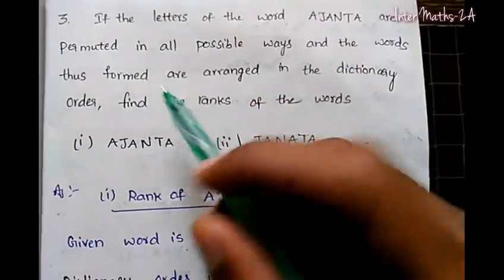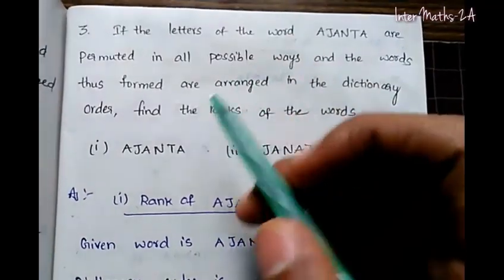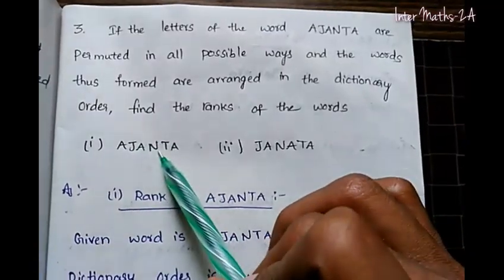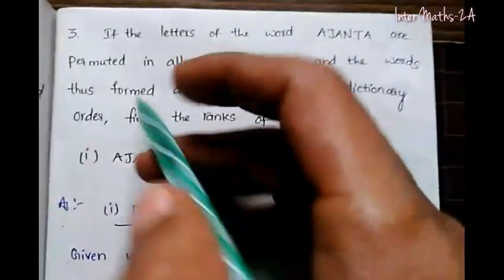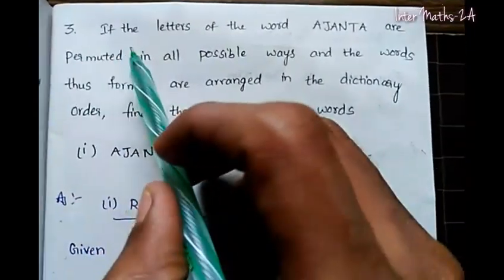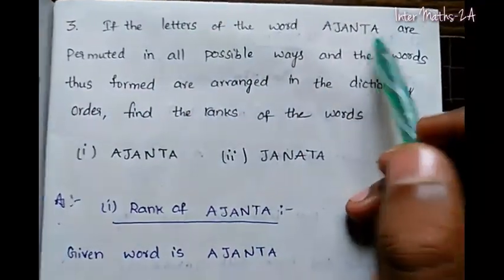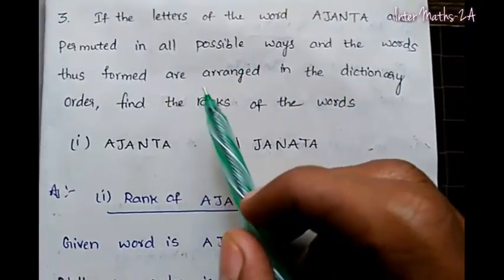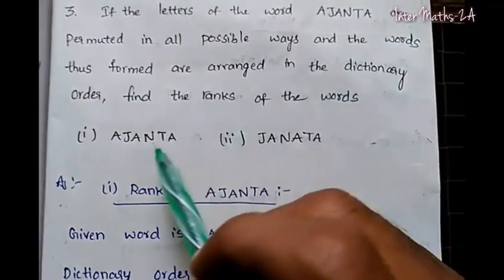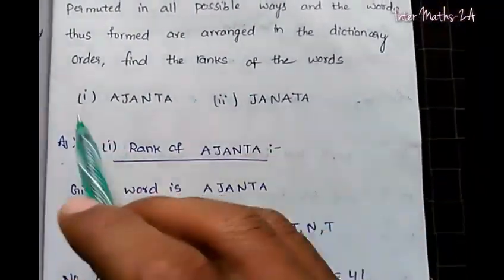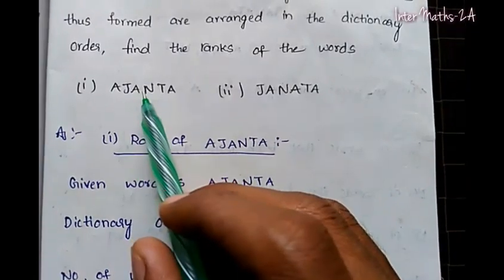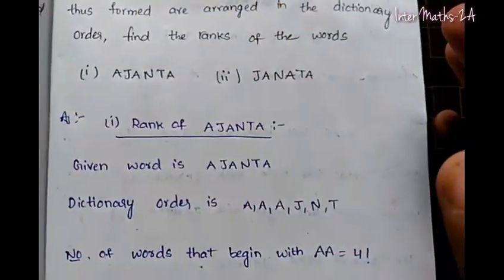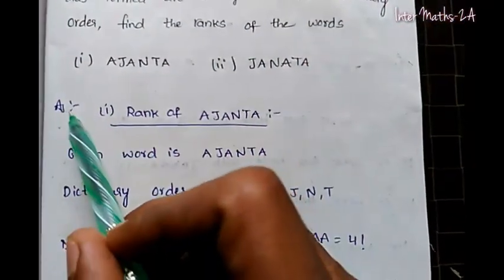Hey friends, welcome to Internet Tutorials. We will see the rank of AJANTA and JANATHA. The question is: if the letters of the word AJANTA are permuted in all possible ways and the words formed are arranged in dictionary order, find the rank of the word AJANTA. The second one is JANATHA.